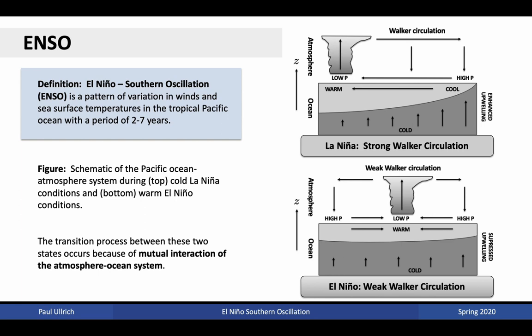Formally, the El Niño Southern Oscillation is a pattern of variation in winds and sea surface temperatures in the tropical Pacific Ocean with a period of about two to seven years. The ocean-atmosphere system tends to switch between El Niño and La Niña states with a period of about two to seven years. The La Niña conditions correspond to an enhancement of the neutral state of the equatorial Pacific, and are associated with a strengthening of the Bjerknes feedback — that is, the positive phase. Pressure decreases in the west and increases in the central Pacific. During warm El Niño events, the warm pool spreads eastwards, bringing atmospheric convection along with it and weakening the Walker circulation.